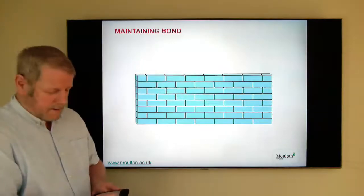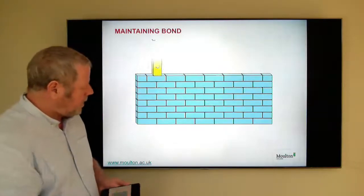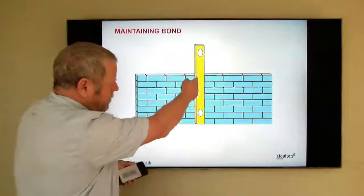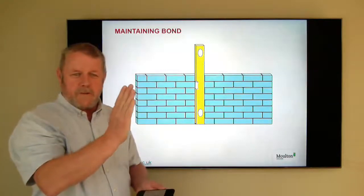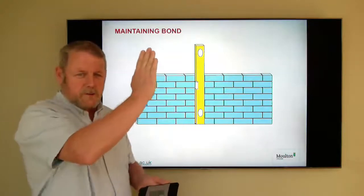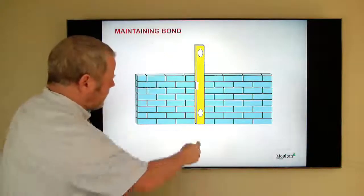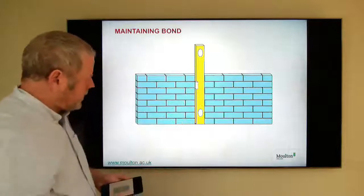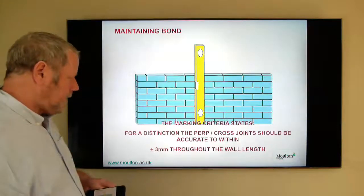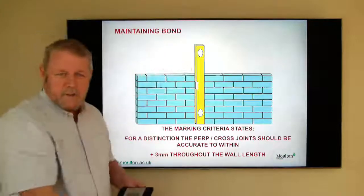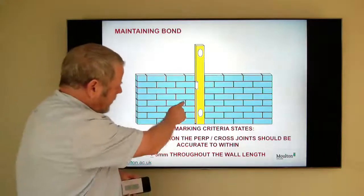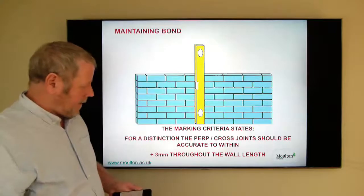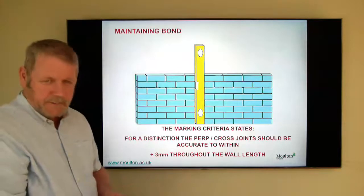And the final part is we want to make sure that these perp joints stay in alignment. What you don't want to do is to look up a wall and see perp joints and alternate courses moving about. So we're looking for these perp joints to be nice and plumb, vertically aligned on alternate courses, as you can see. And again, plus or minus three millimetres.